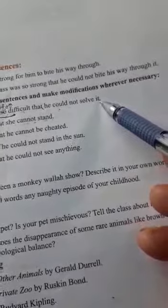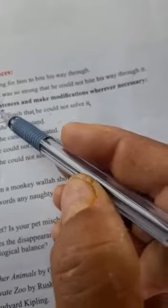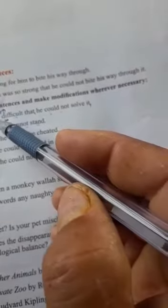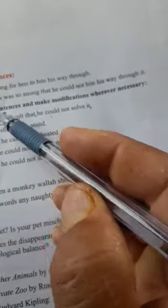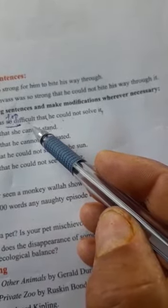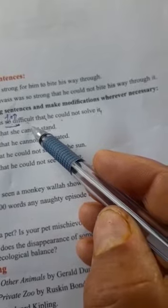تو اس کا answer ہے: So کی جگہ ہم لگائیں گے too. Too کا مطلب ہے اتنا۔ So کی جگہ لگائیں گے too. The question was too difficult.